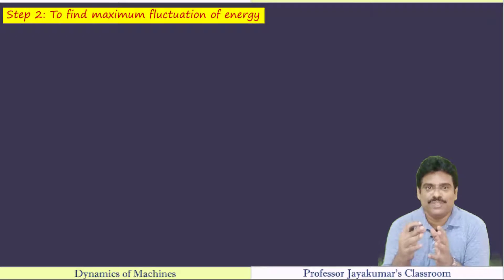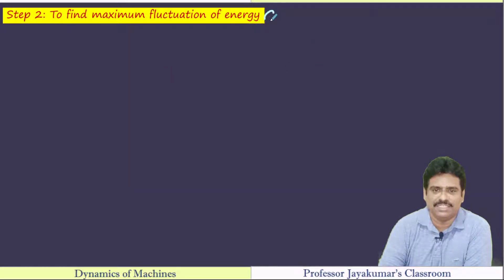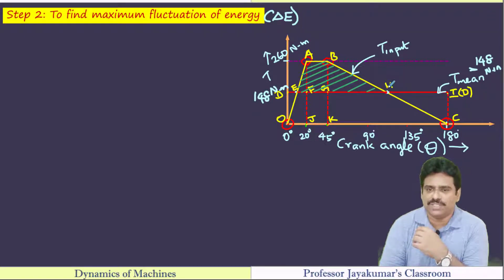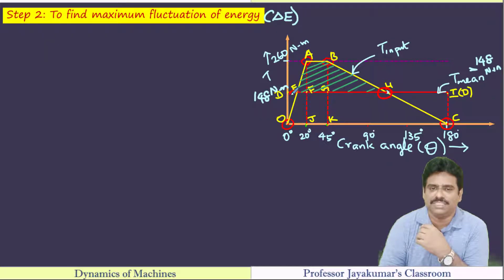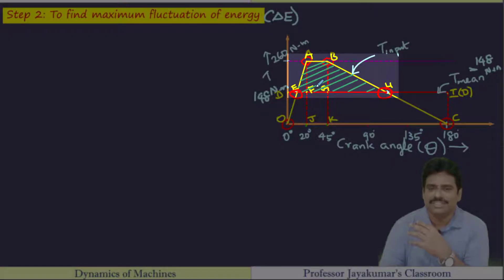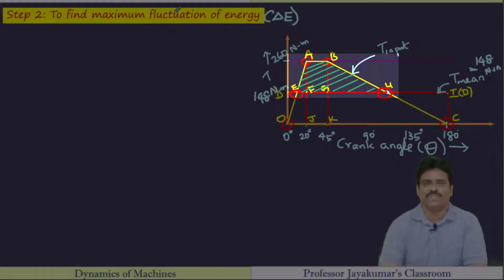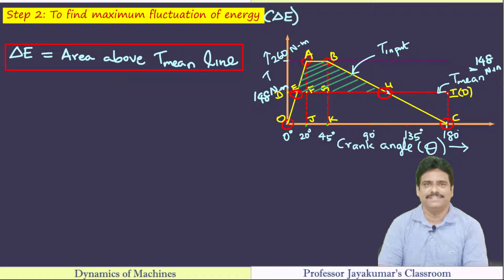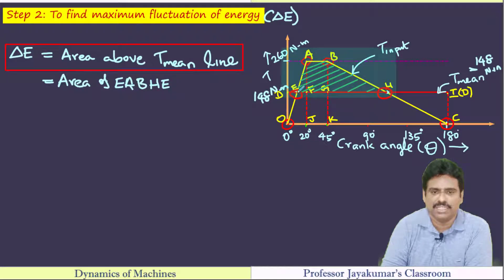Once we know T_mean, we can determine maximum fluctuation of energy, delta E — which is maximum energy minus minimum energy. Flywheel speed and hence energy will be maximum at point H and minimum at point E. Delta E equals the area above the mean torque line, which is the composite shaded area EABHE. This composite area can be split into three parts: triangle AEF, rectangle ABGF, and right-angle triangle BGH.